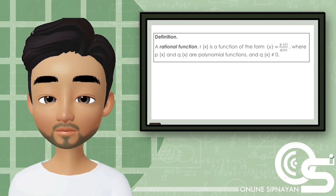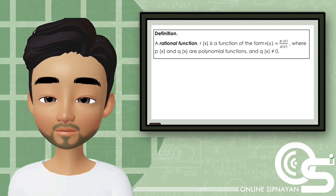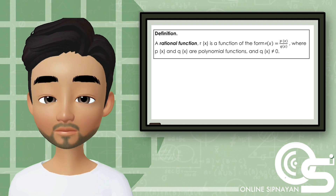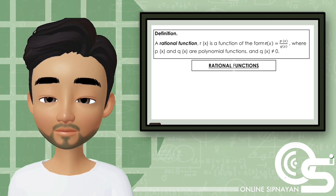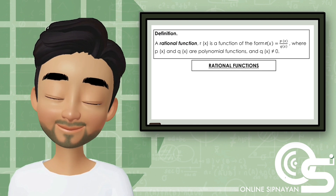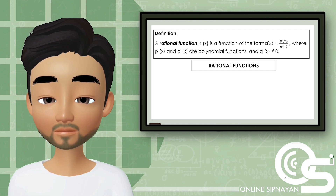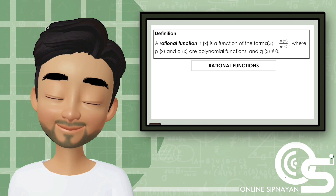Based on our definition, a rational function r of x is a function of the form r(x) = p(x) over q(x), where p(x) and q(x) are polynomial functions, and q(x) is not equal to zero.